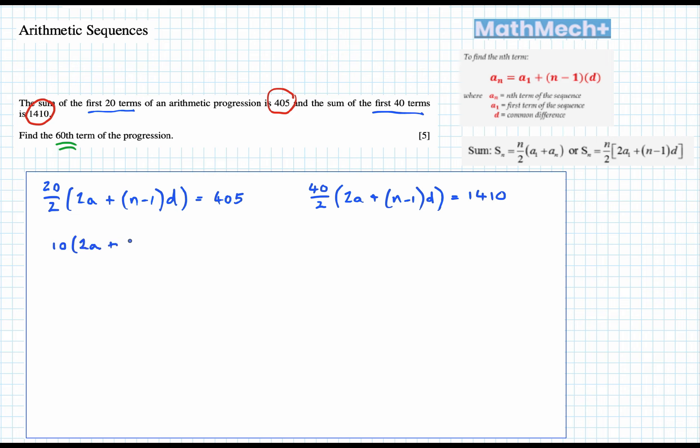n minus 1 is 19. That's right, 405. Second one, 40 over 2 is 20, times 2a plus 39d equals 1410.